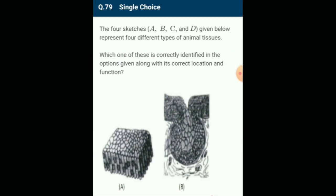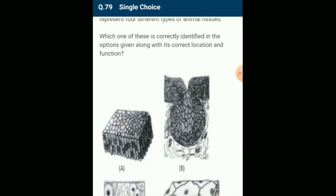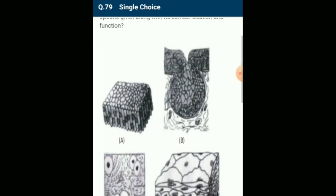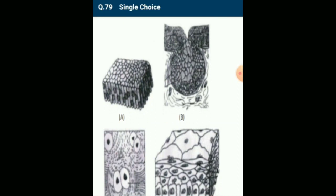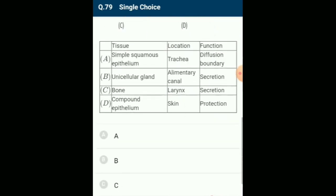Four diagrams representing four different types of animal tissues: which one is correctly identified with its correct location and function? Compound squamous epithelium is a type of tissue that makes up skin layers and lines some body cavities and organs; its structure makes it an excellent protective layer. The answer for this question is option D.